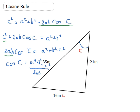So what I'm going to do is 35² + 21² - 16², divided by 2 × 35 × 21, and that equals cos C.